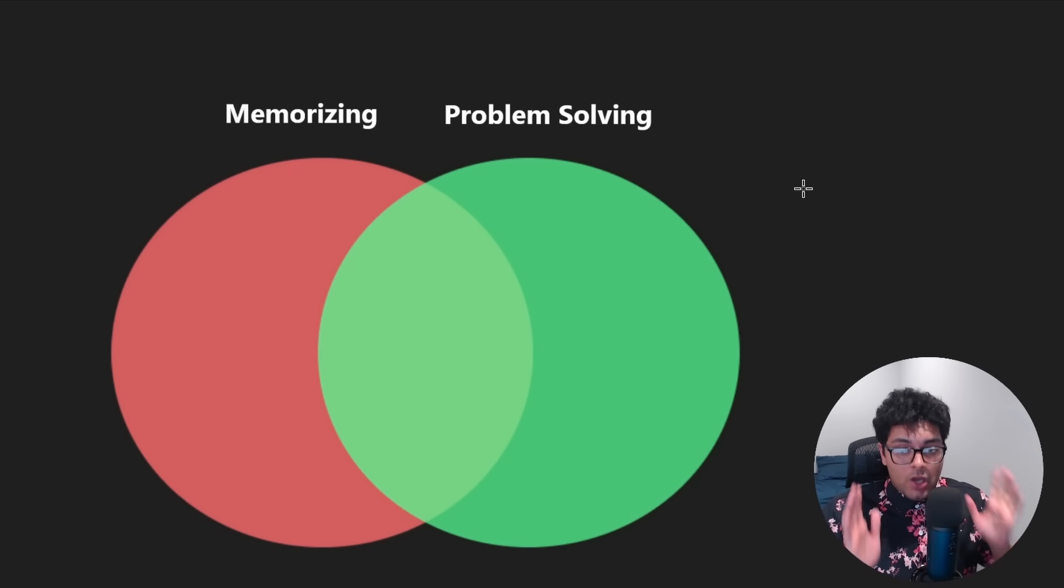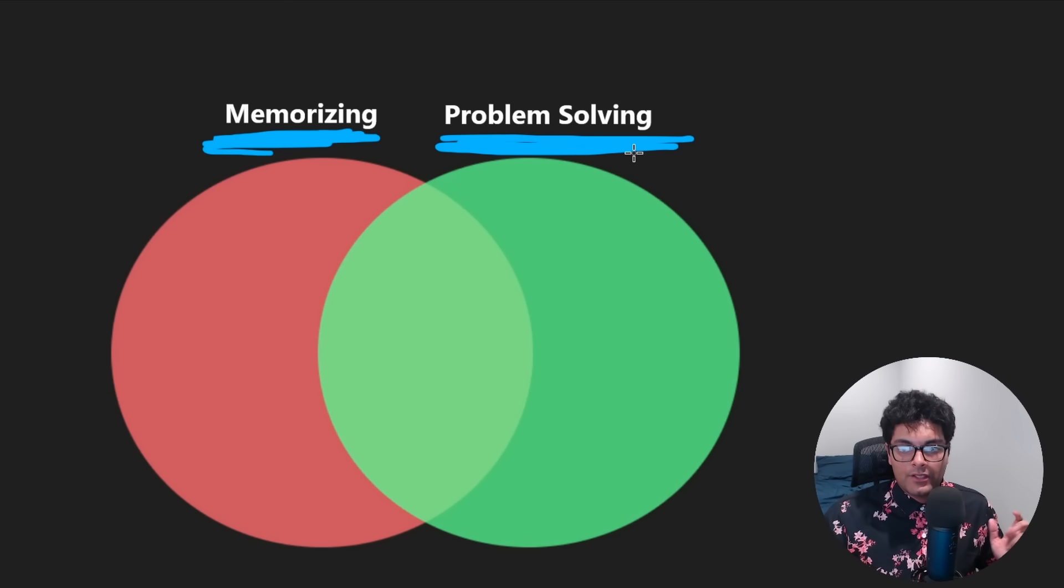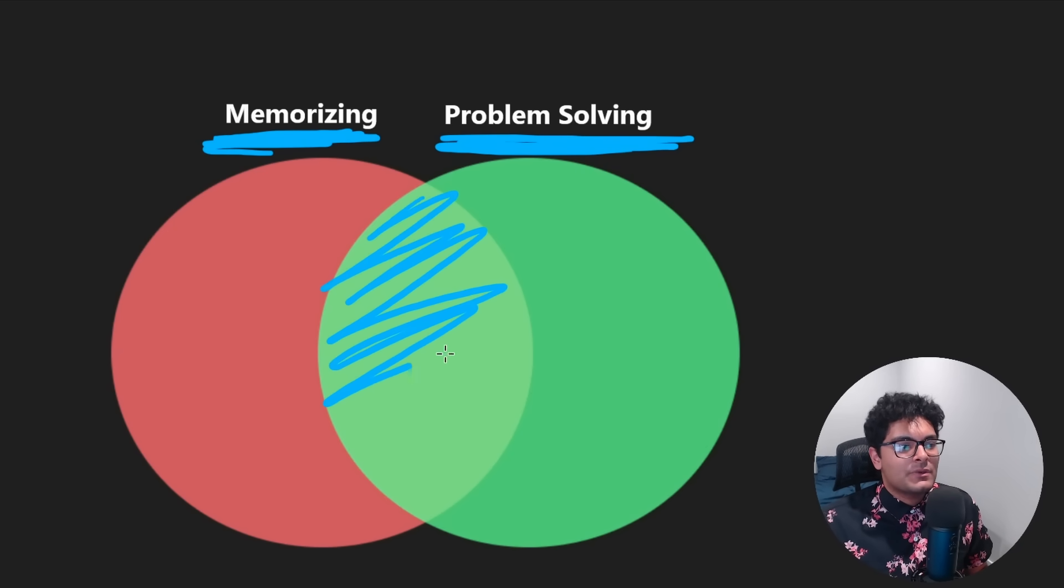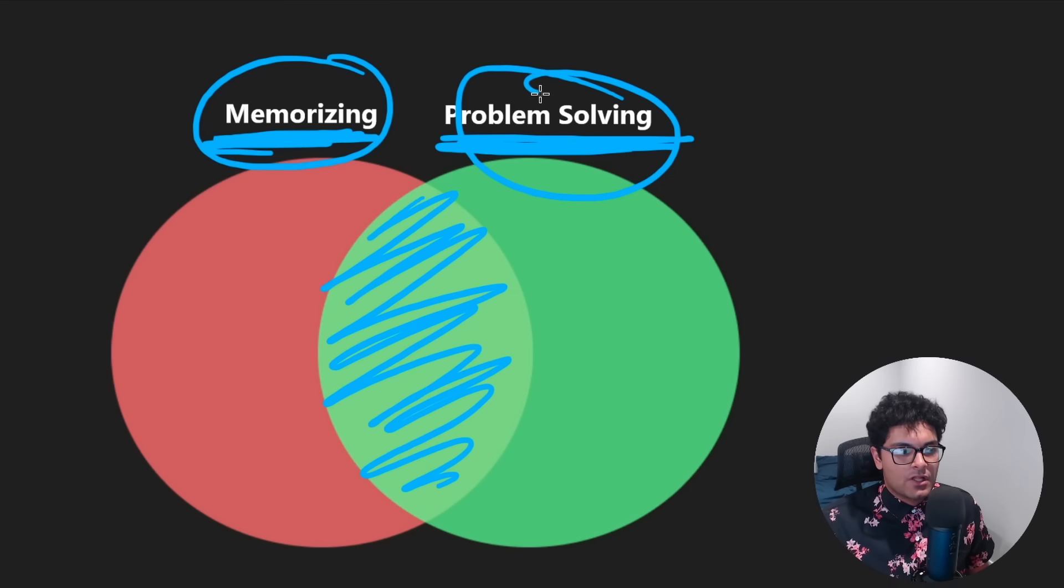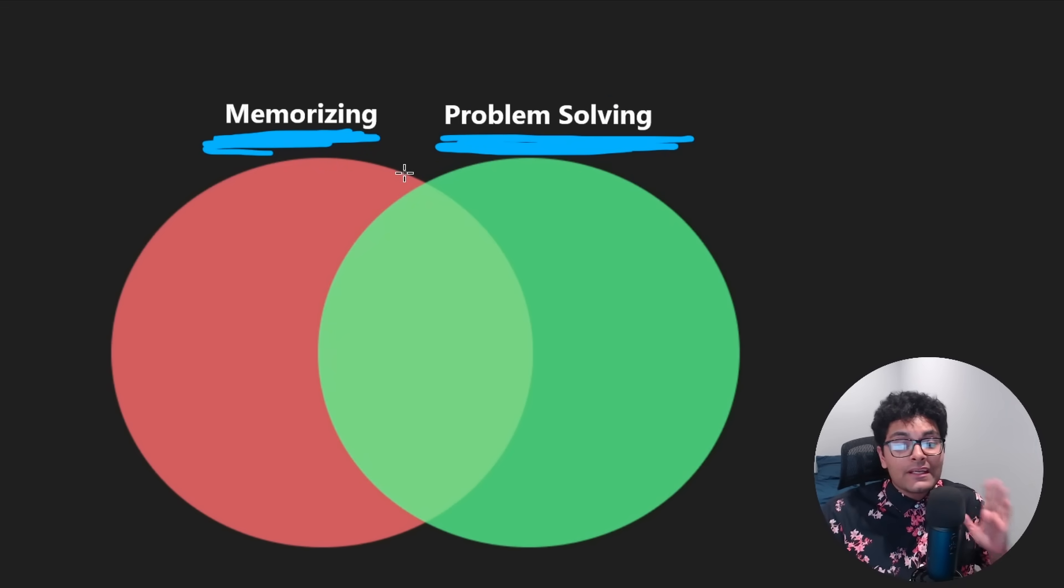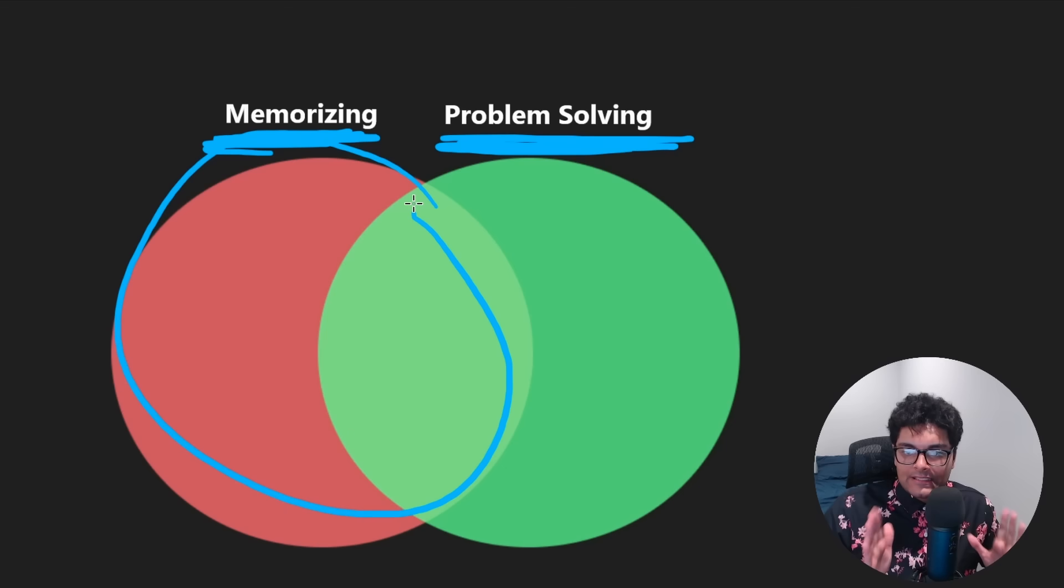Don't focus on extremes. If you try to memorize solutions for every single problem, which is not easy by the way, you'll never be able to solve a new problem. If you never look at the solution for a problem, you'll spend 10 hours on a single problem and still won't be able to figure it out. In my opinion, there is an intersection between memorizing and problem solving. You need a little bit of both. If you're going to memorize anything, please, please memorize the DFS algorithm. It's the single most important algorithm in coding interviews.